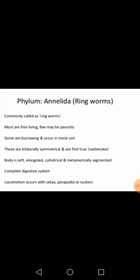The body of Annelida is soft, elongated, cylindrical, and metamerically segmented. Their body is very soft, elongated, cylindrical, and shows metamerism — body segments are present. If you look at an earthworm, you can see approximately 200 segments. This arrangement of segments is called metameric segmentation. They have a complete digestive system, meaning both mouth and anus are present.